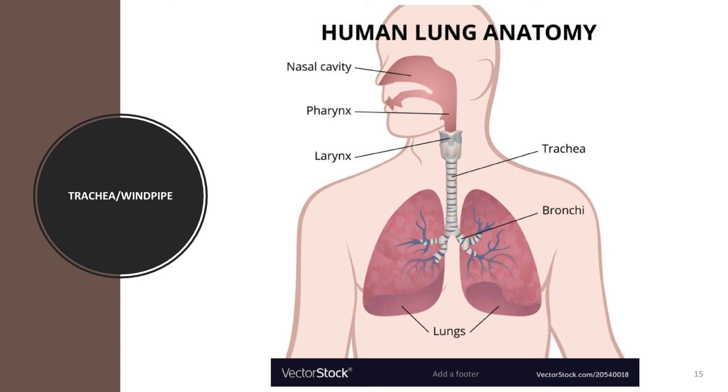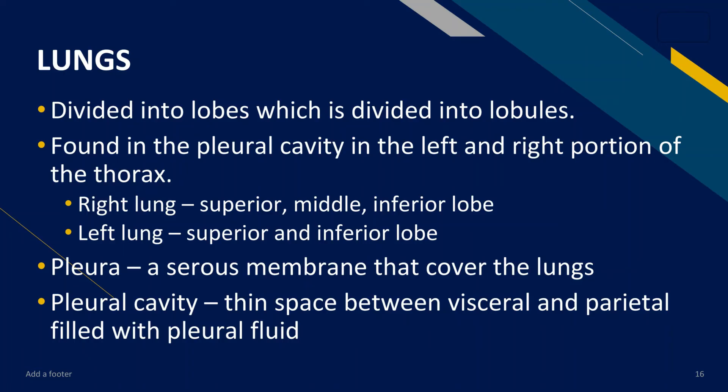The lungs are two organs that remove oxygen from the air and pass it into your blood. We discussed this exchange of carbon dioxide and oxygen inside the lungs in the circulatory system — the pulmonary circulation — which involves arteries, veins, the heart, capillaries, and many more parts. The lungs are divided into lobes, which are further divided into lobules, and are found in the pleural cavity in the left and right portions of your thorax or chest.